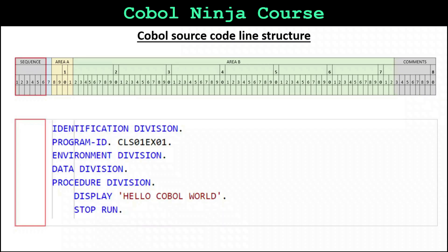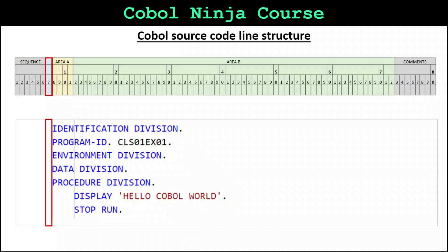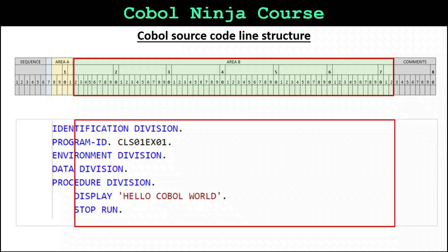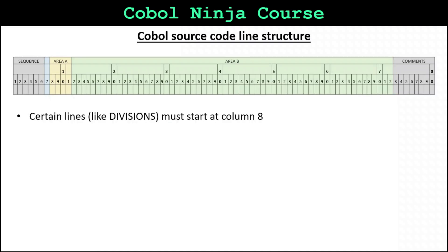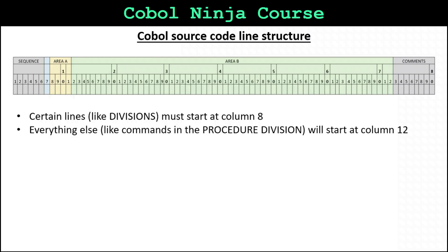So if we look at our COBOL program, we've got the sequence columns 1 through 6, which are usually left empty. Column 7 will contain an asterisk if the entire line is a commented line. Area A, or columns 8 through 11, is where the divisions begin. All other lines in COBOL, such as commands within the procedure division, begin at column 12 and go all the way until column 72. Columns 73 through 80 are not part of the program and can be used for abbreviated comments or codes. Also notice that every COBOL sentence ends with a period. Remember: divisions must start at column 8, everything else like commands in the procedure division will start at column 12, and COBOL statements must end with a period.